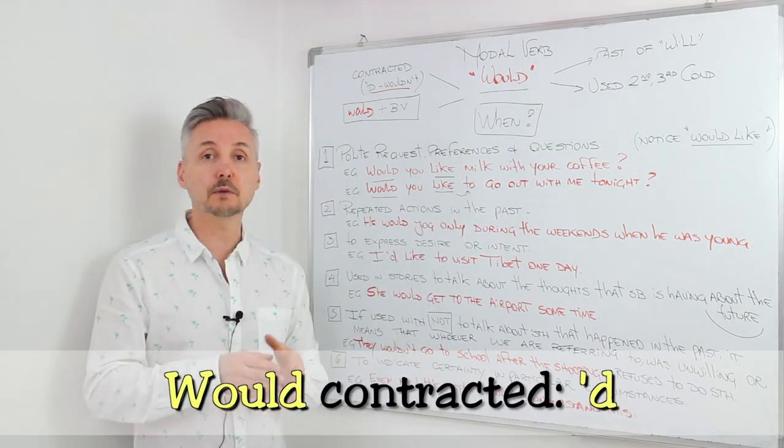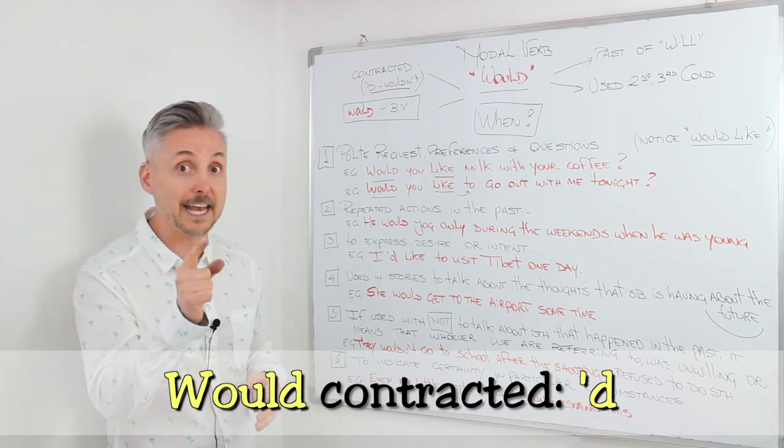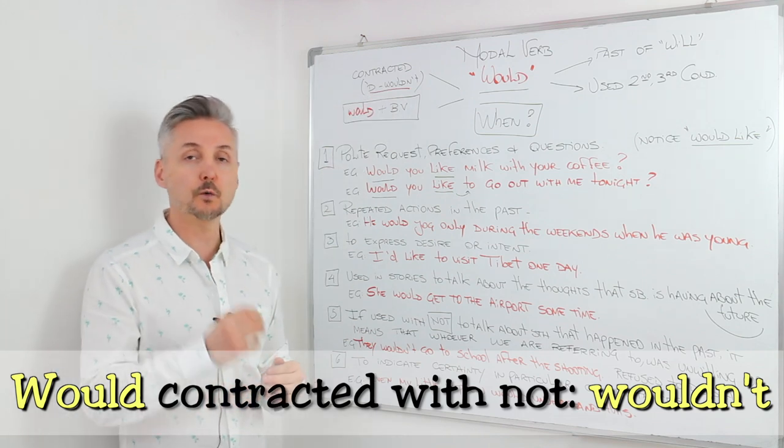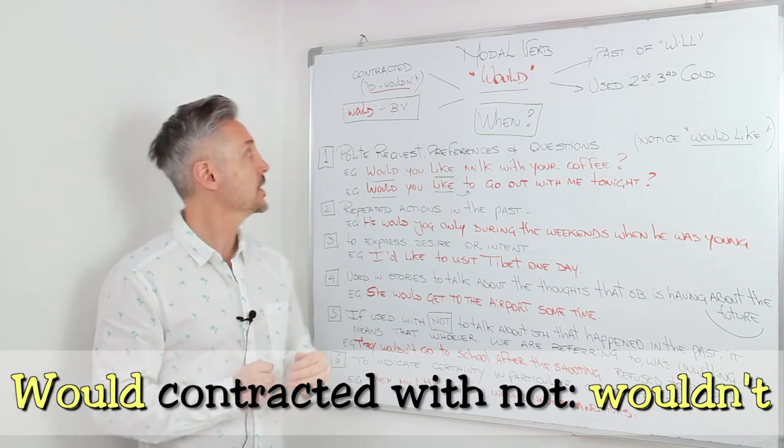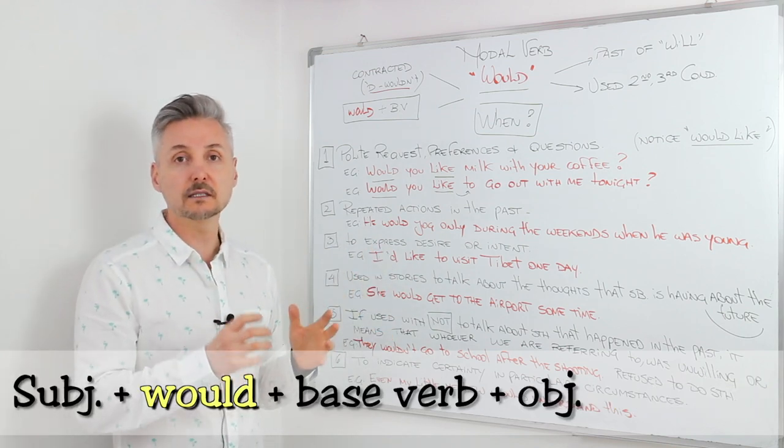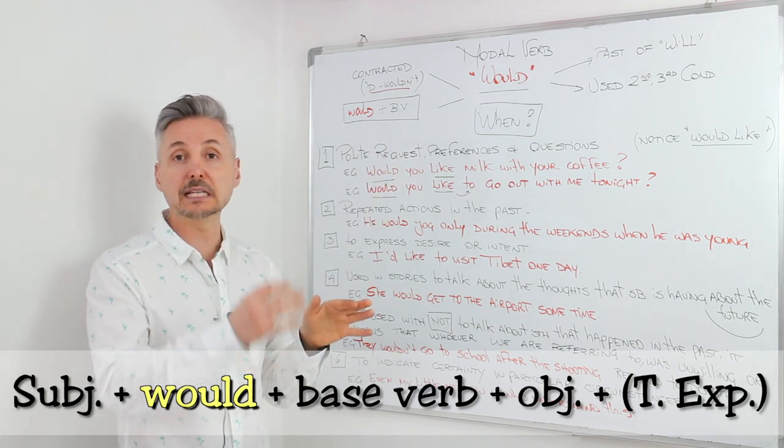Now, contracted, it would be apostrophe D. Do not confuse it with had. Pay attention to that. And wouldn't - would plus not. Then the basic sentence would be subject plus would plus the base of the verb.